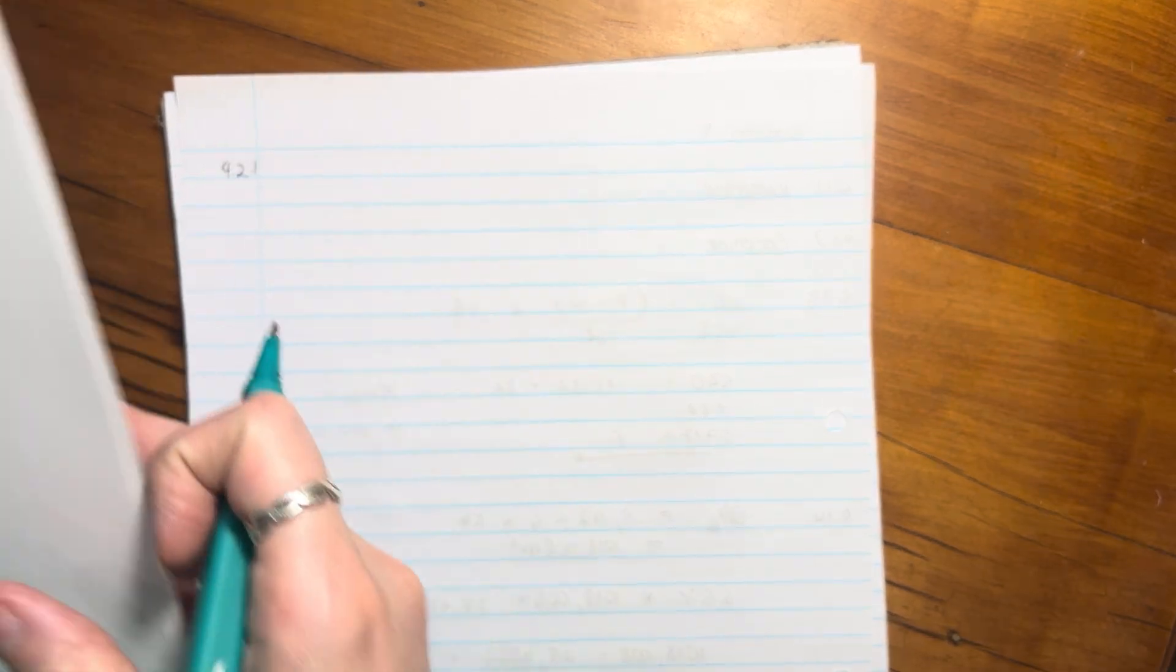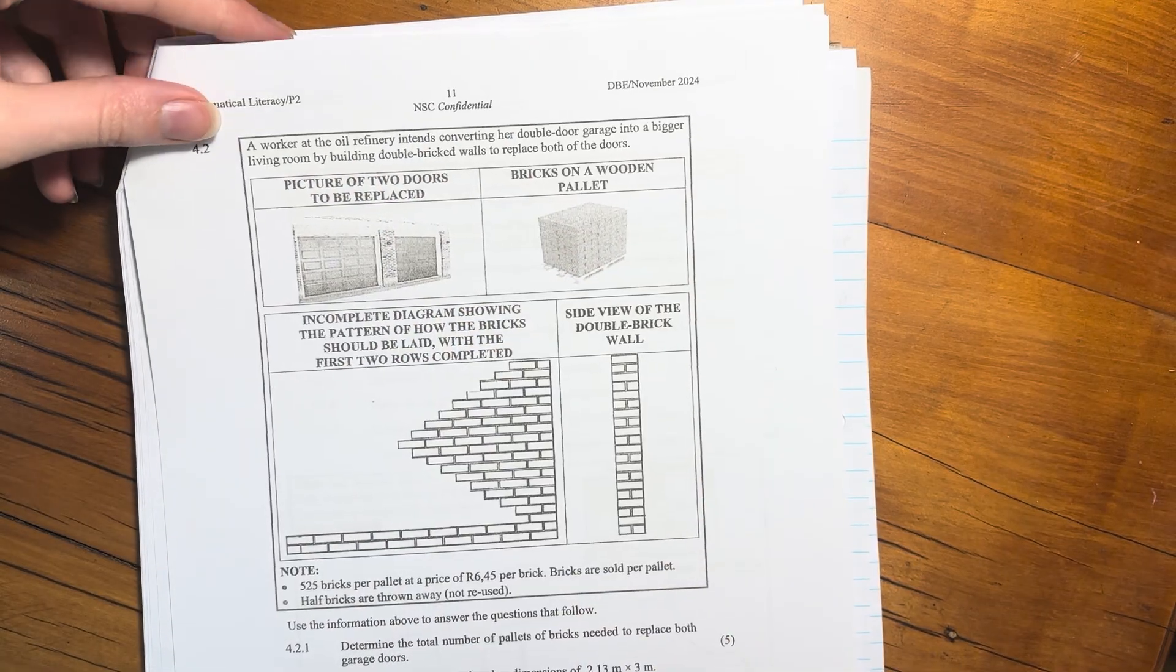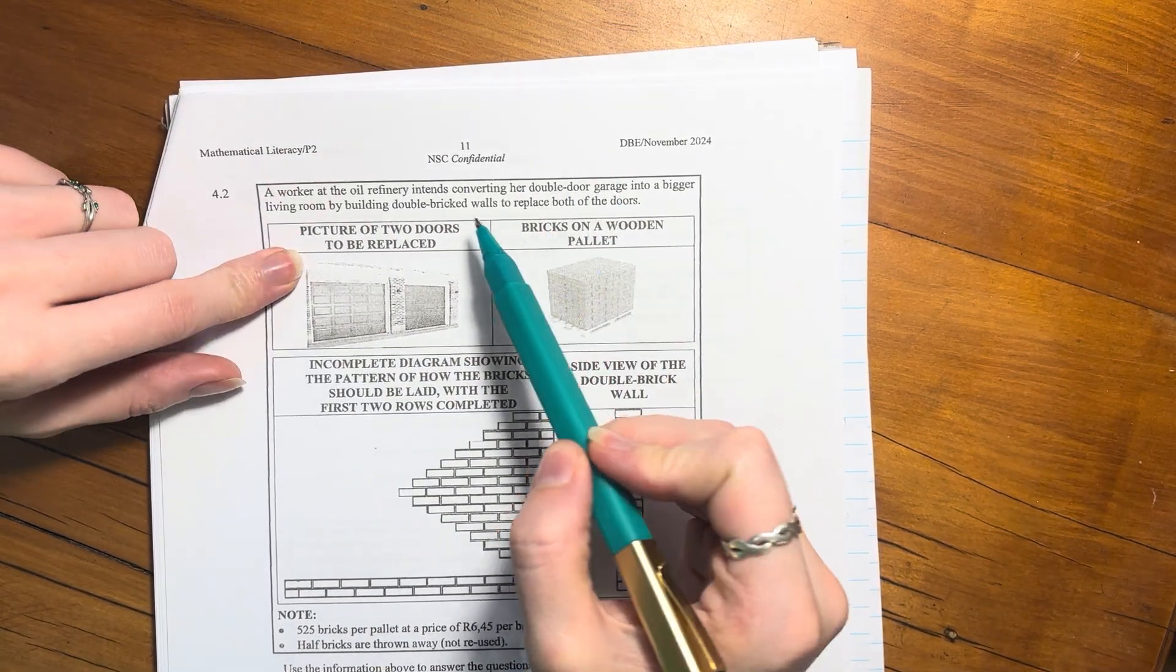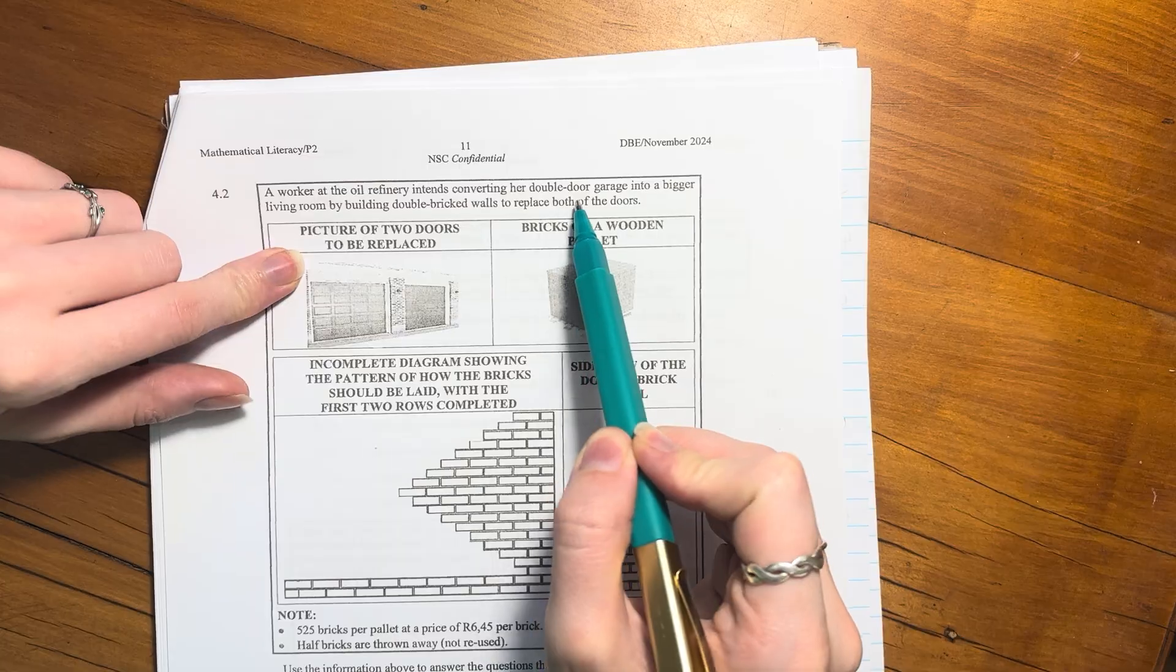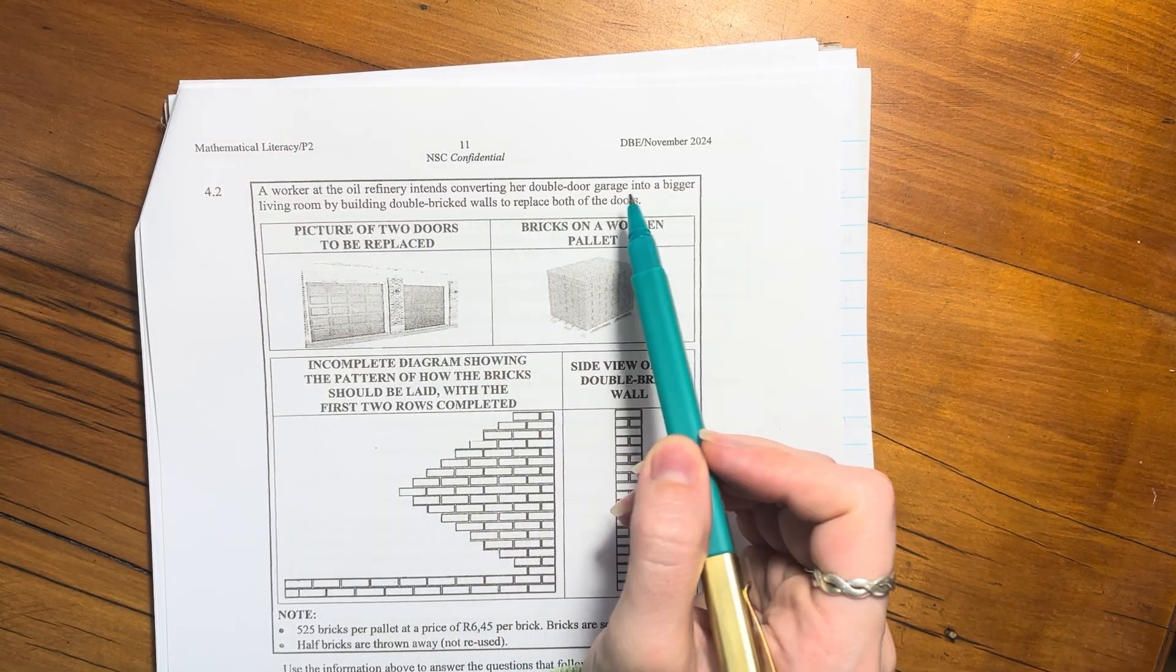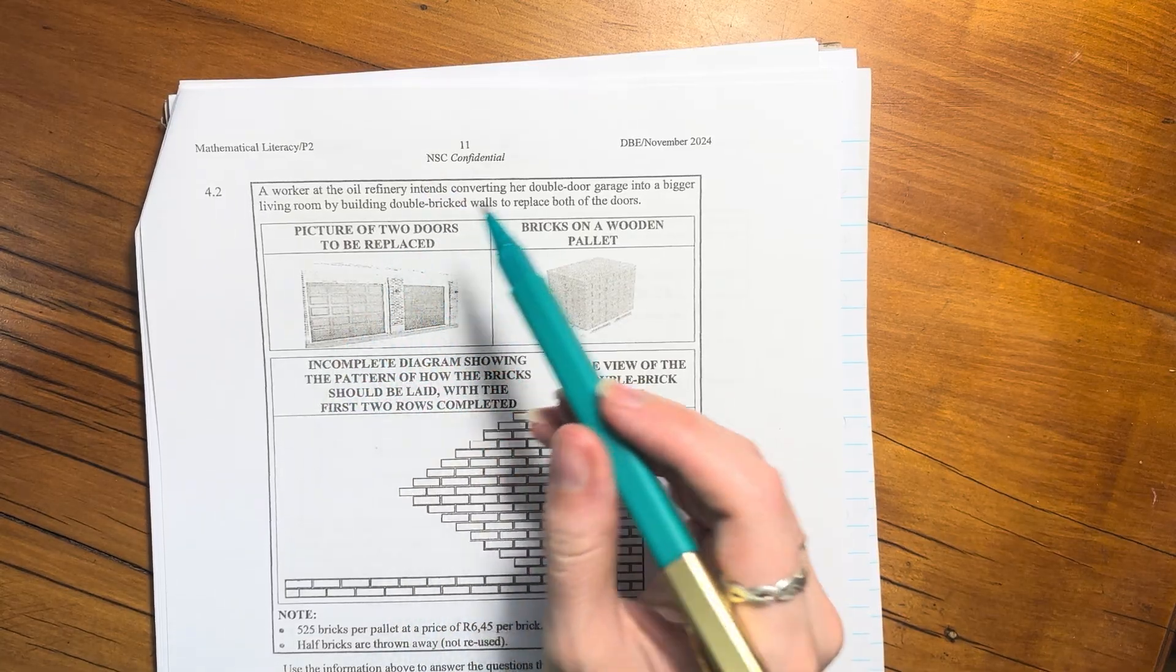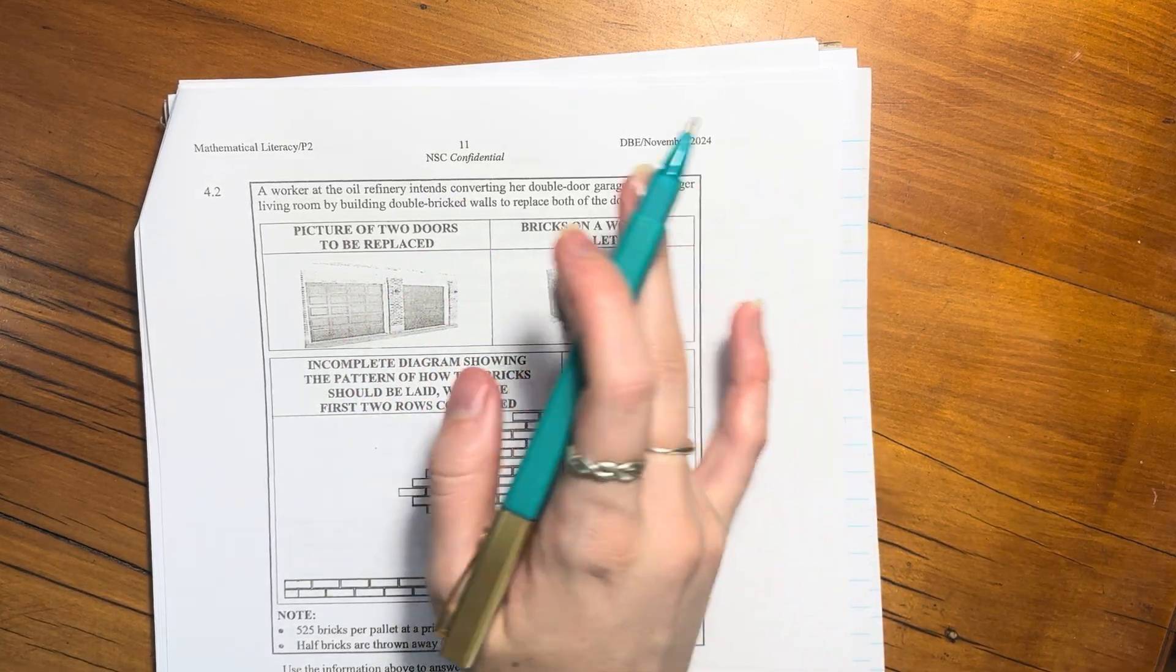Question 4.2, let's look at this. A worker at the oil refinery intends converting her double door garage into a bigger living room by building double bricked walls to replace both of the doors. Basically here, instead of doors, she's going to build brick walls.